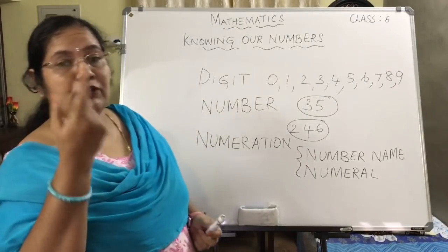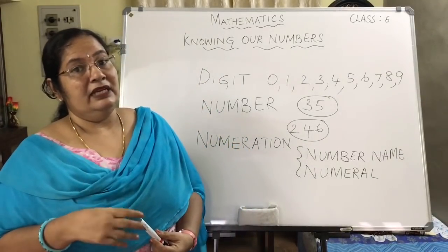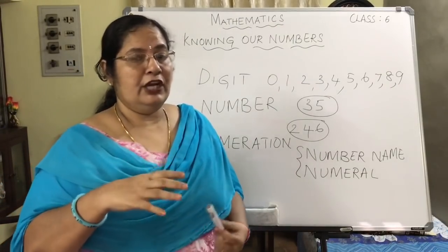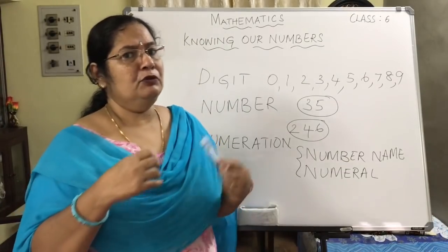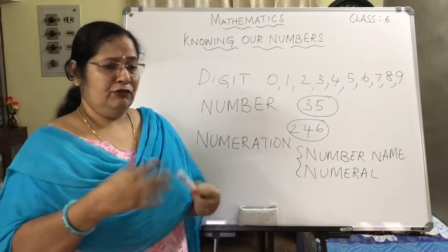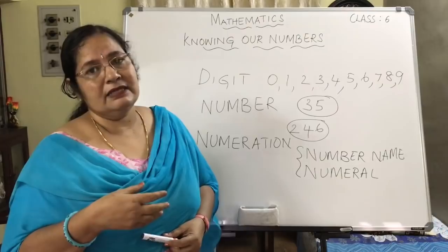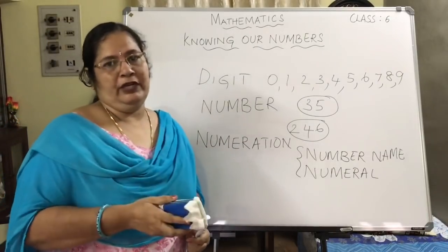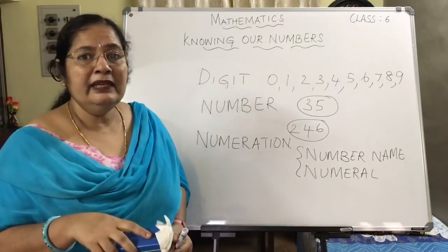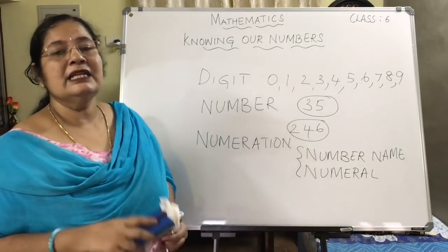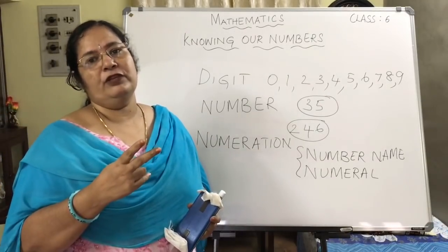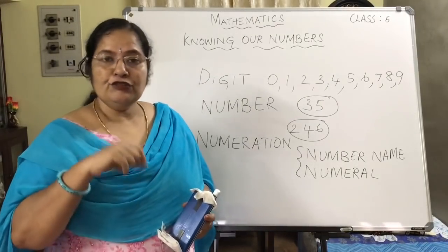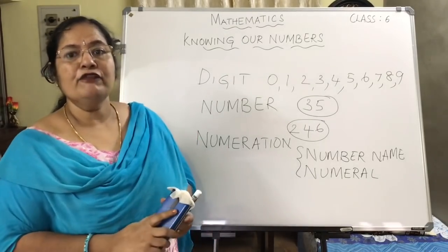Now earlier we had provided you with worksheets where we wrote number names and numerals, and we also saw place values and the place value chart. Up to class 5 you would have learned up to the ten thousands place. Now today we will be dealing with the systems of numeration. Basically there are two systems: the Indian system of numeration and the international system of numeration. Today we will be dealing with the Indian system of numeration.